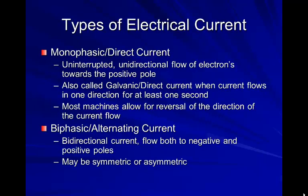Some types of electrical current: monophasic, or direct current, is an uninterrupted and unidirectional flow of electrons towards the positive pole. It is also called galvanic or direct current when current flows in one direction for at least one second. Most machines allow reversal of the direction of current flow — you can switch which electrode is positive and which is negative. When a study references galvanic current, they are talking about monophasic current. Biphasic or alternating current is a bidirectional current that flows both to negative and positive poles, and it can be symmetrical or asymmetrical.